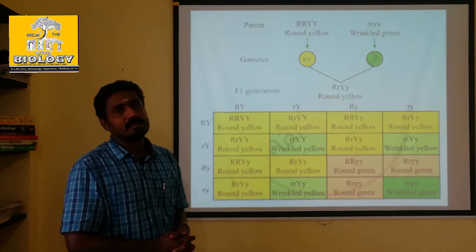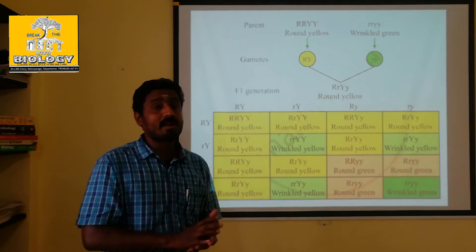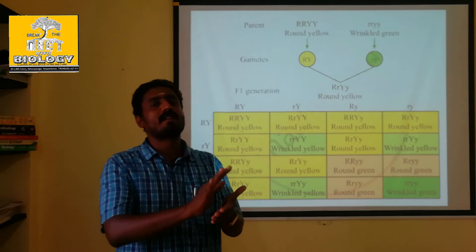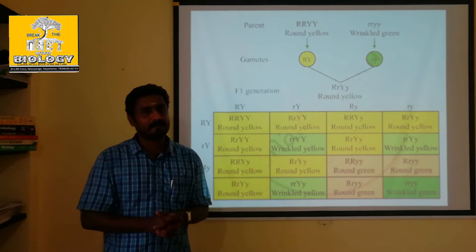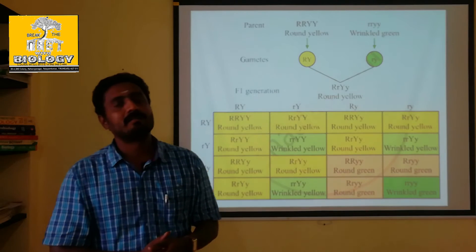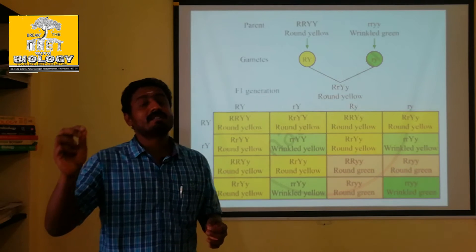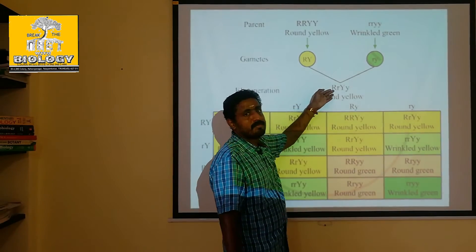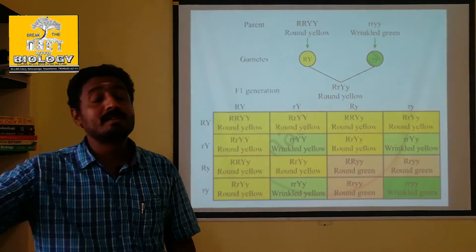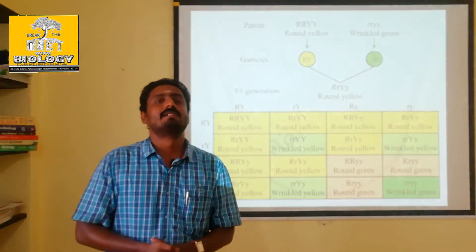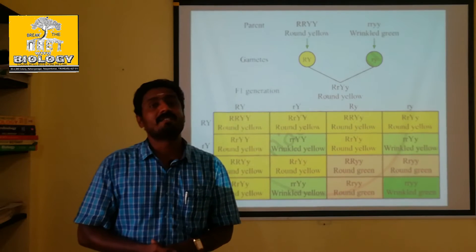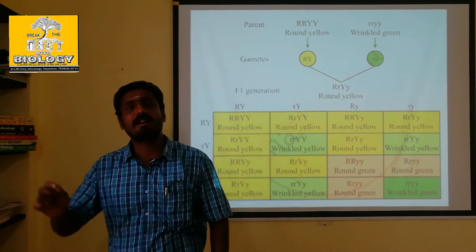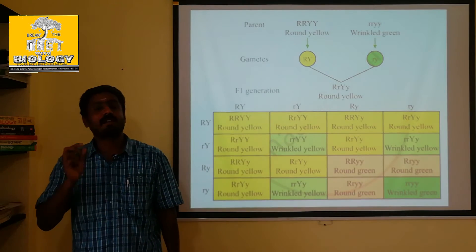If there is a round yellow plant, its genotype is capital R, capital Y, capital Y — that is capital R, small R, capital Y, small Y. This is the dihybrid test cross. If you have a plant with capital R, capital Y, capital Y, fuse with the recessive parent. You can check: all of it is a round yellow plant. That is capital R, capital R, capital Y, capital Y. In the first generation there is capital R, small R, capital Y, small Y. But if you have a parent that is capital R, capital R, capital Y, capital Y — there is a plant that has a round seed and a yellow seed. That genotype is also capital R, capital R, capital Y, capital Y.